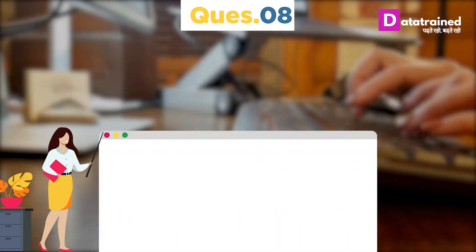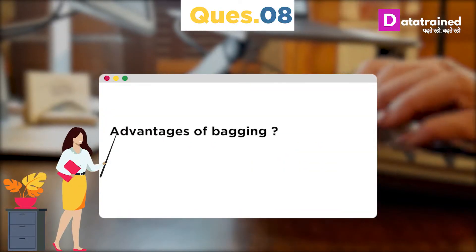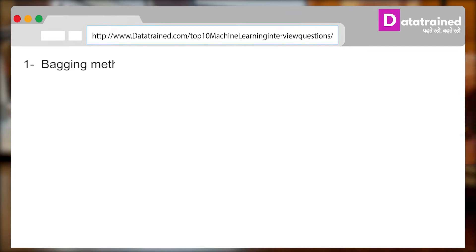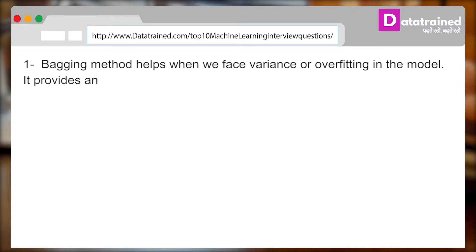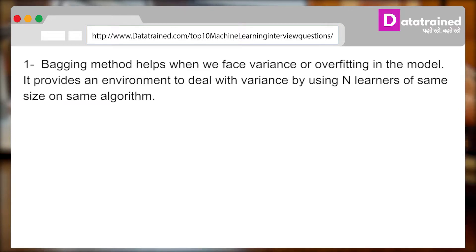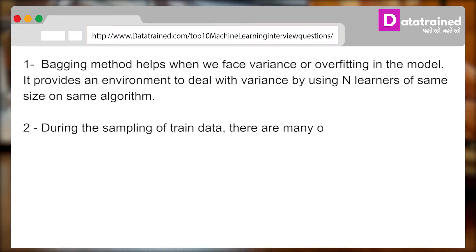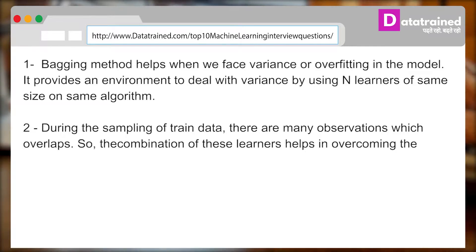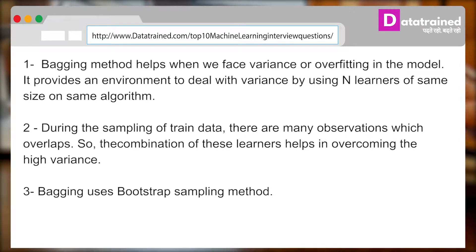You can also be asked: Advantages of bagging? And you can answer: Bagging method helps when we face variance or overfitting in the model. It provides an environment to deal with variance by using n learners of same size on same algorithm. During the sampling of trained data, there are many observations which overlap, so the combination of these learners helps in overcoming the high variance. And bagging uses bootstrap sampling method.